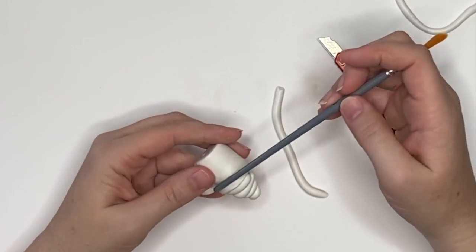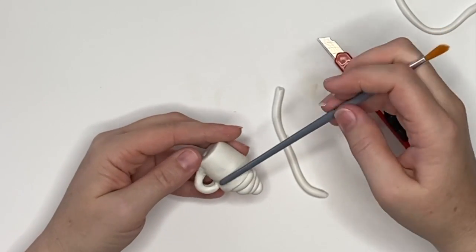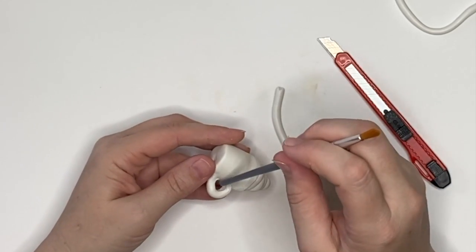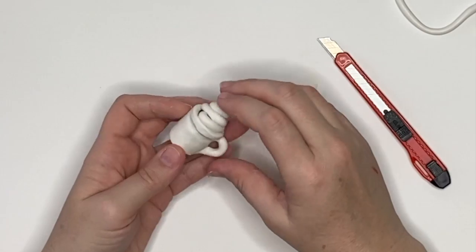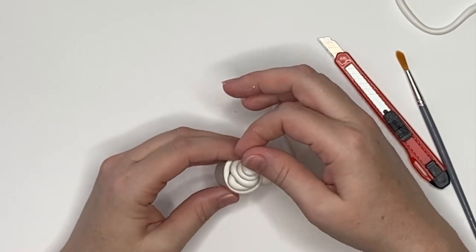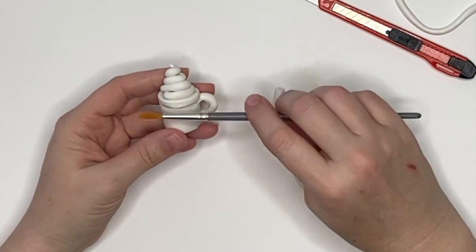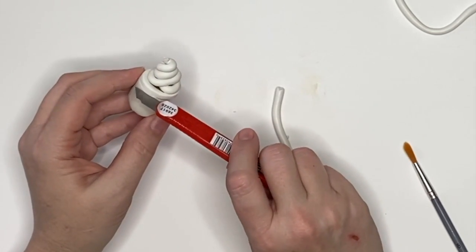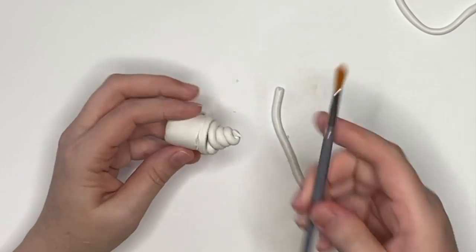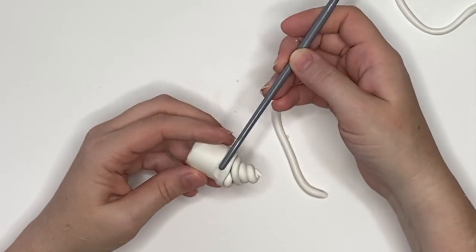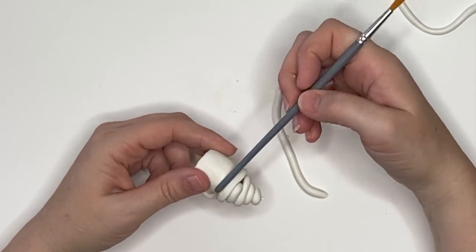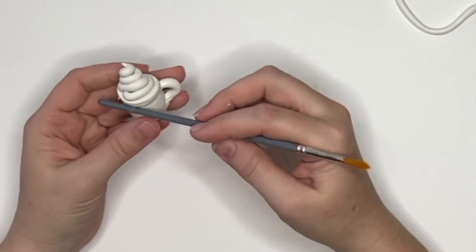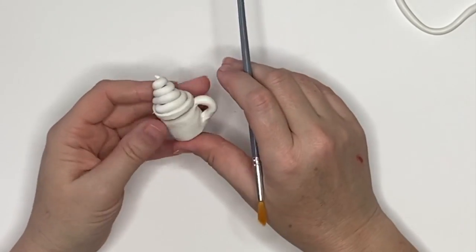Alright, so speaking of the divots and the imperfections, you're going to have a ton of them, especially if you're working with white clay. You'll be able to see lint, you'll be able to see your fingerprints, tons of stuff. So what you want to do is get one of two things. You can either get a nail polish remover or you can get an isopropyl alcohol. And what we're going to do is protect your work surface, which I didn't do, you're going to see in a minute.